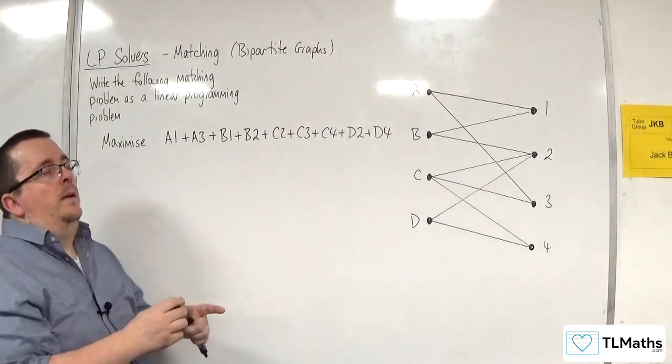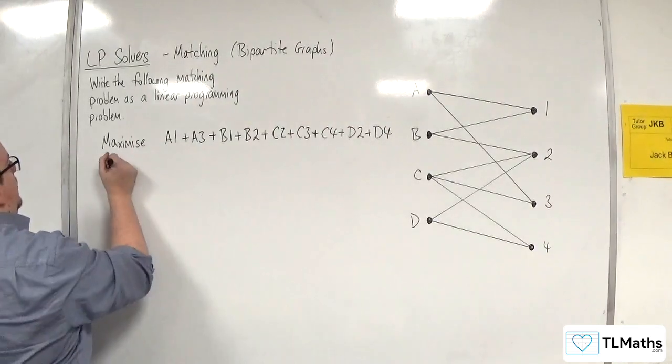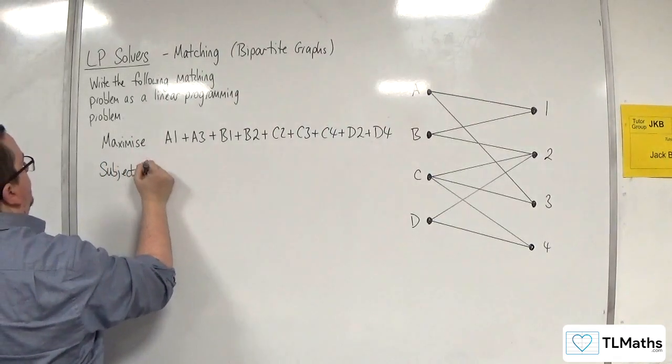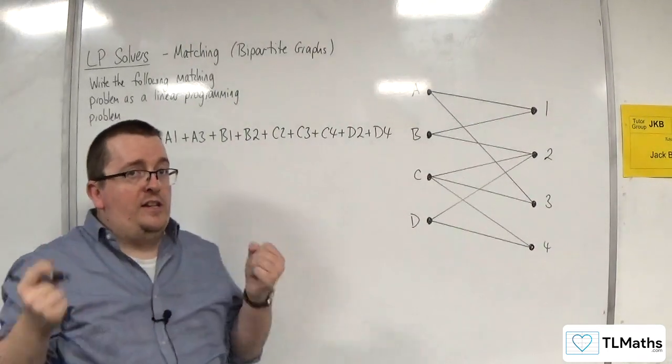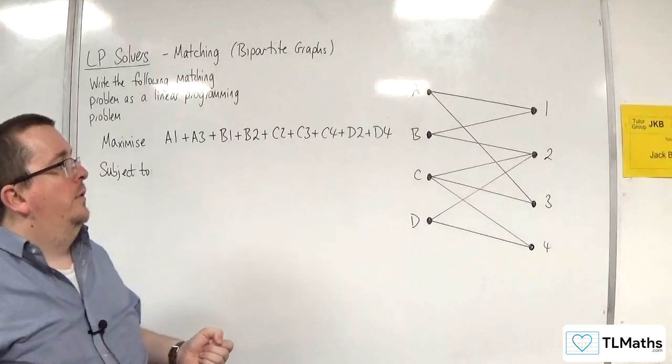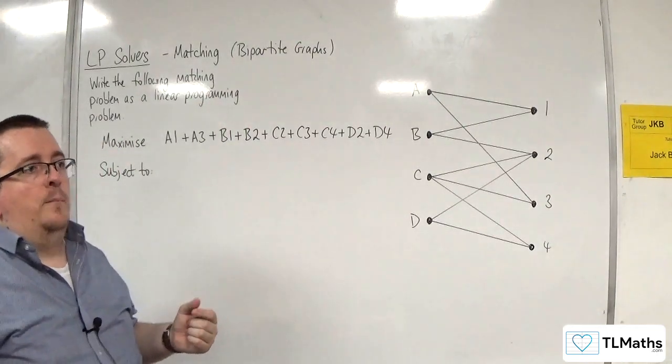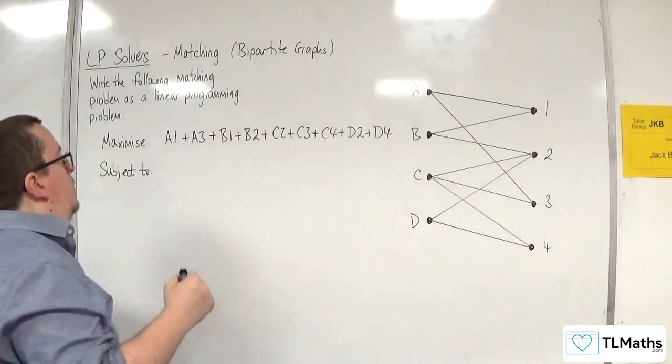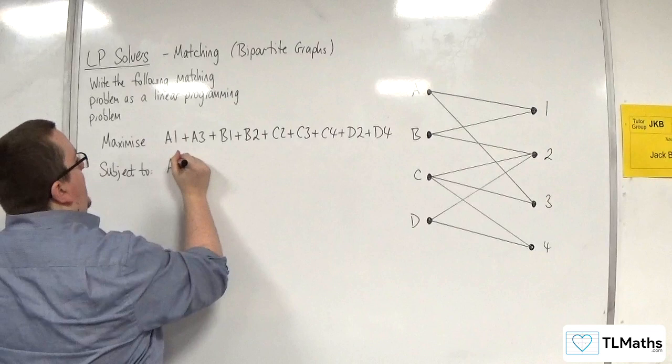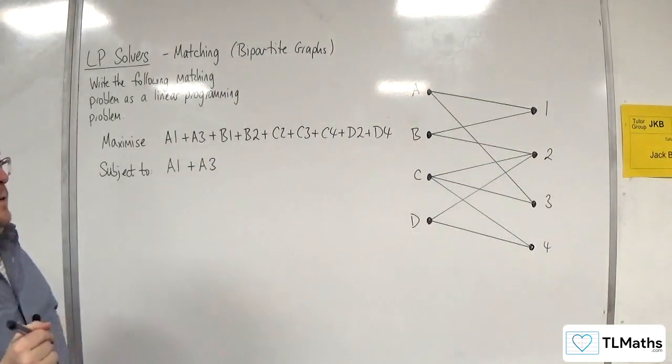So I need the constraints that will allow that to happen. Subject to. Now, worker A can only do two jobs. So 1 or 3, but I only want them to do one of them. So I want worker A to either do 1 or 3, but they can't do both.